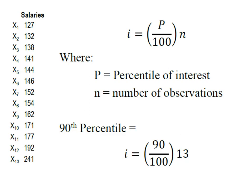So, here I have some salaries and they're in thousands of dollars. And I have 13 observations. You'll see they're from smallest to largest. And I've simply labeled them x1 through x13. It keeps me from having to count up and down. We're going to use this formula for the index, where p is the percentile of interest and n is the number of observations.